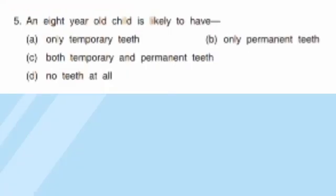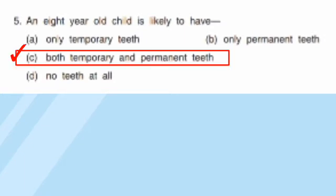Question five: an eight-year-old child is likely to have — the correct answer is C, both permanent and temporary teeth. Because from age 6 to 12, permanent teeth start coming in, so an 8-year-old will have both temporary and permanent teeth.